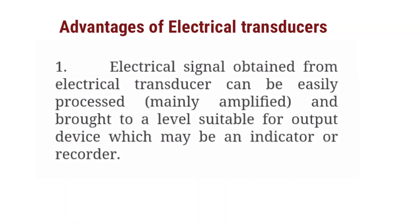The various advantages of electrical transducers are: simply, we can easily convert any signal into electrical form using electrical transducers. The main advantage is that electrical signals obtained from electrical transducers can be easily processed — mainly amplified — and brought to a level suitable for an output device, which may be an indicator or recorder. We can also easily store the data using recorders or display the quantity using indicators or meters.